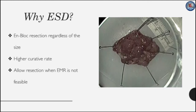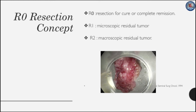One of the most important concepts of ESD is R0 resection, which stands for resection for cure or complete remission. In this situation, the peripheral and deep margins of the lesion are negative for any tumor. In R1 resection, there is microscopic residual tumor. In R2 resection, there is macroscopic residual tumor.